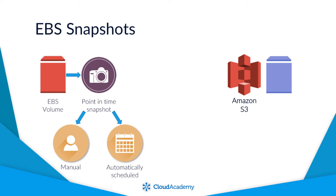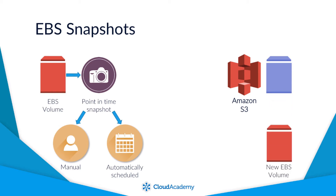The snapshots themselves are incremental, meaning that each snapshot will only copy data that has changed since the previous snapshot was taken. Once you have a snapshot of an EBS volume, you can create a new volume from that snapshot. So if for any reason you lost access to your EBS volume through some form of incident or disaster, you can recreate the data volume from an existing snapshot and then attach that volume to a new EC2 instance.